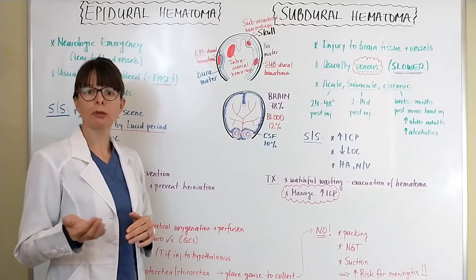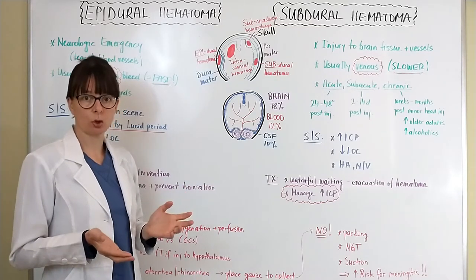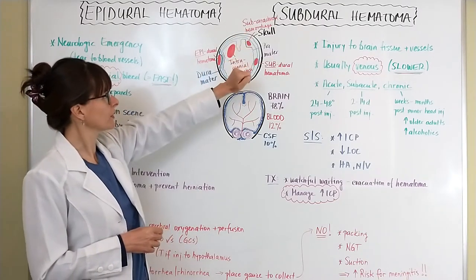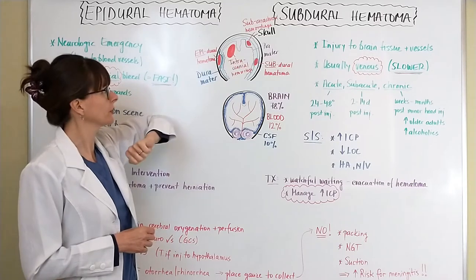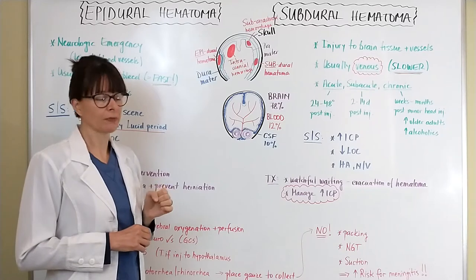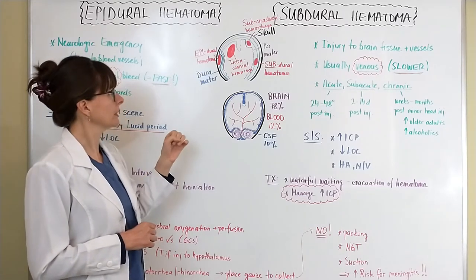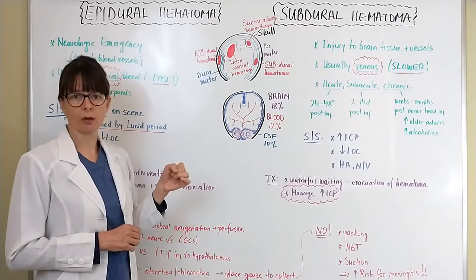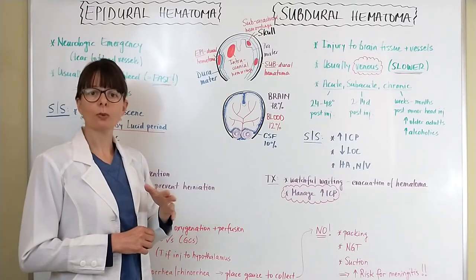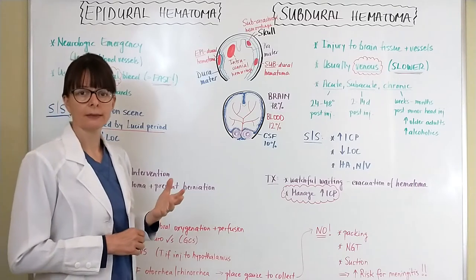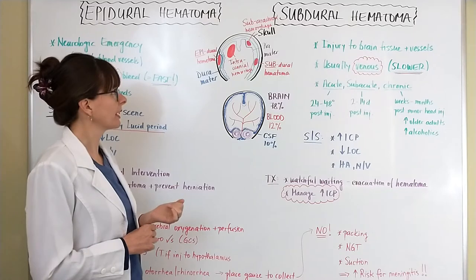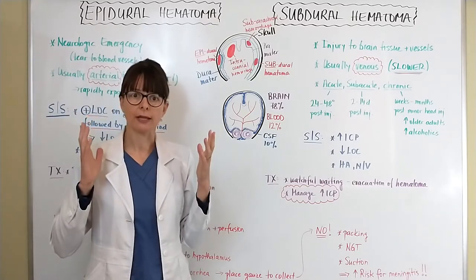Depending on where the bleeding occurs, it is either epidural — above the dura mater — or subdural — below the dura mater — hematoma. I've also drawn out a subarachnoid hemorrhage, which is below the subarachnoid membrane, or an intracranial hemorrhage, which is within the brain. All four of those cause increased intracranial pressure, but depending on the layer and type of bleeding, the patient may have different symptoms.